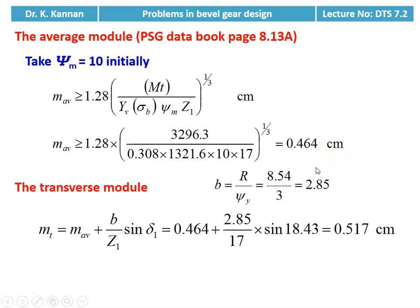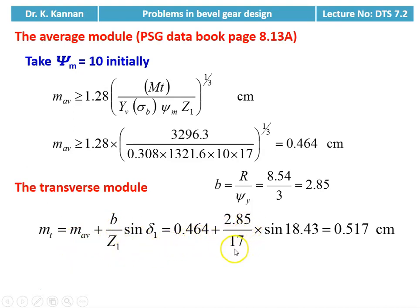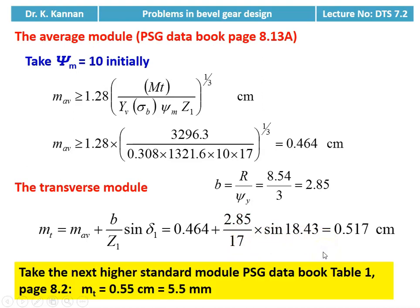We calculate the transverse module. Face width B = R / ψY = 8.54 / 3 = 2.85. Transverse module mt = m_avg + (B / Z1) × sin δ1 = 0.464 + 2.85 / (17 × sin 18.43°) = 0.517 centimeter. The next higher standard module from table number 1 is 0.55 centimeter, or 5.5 millimeter.